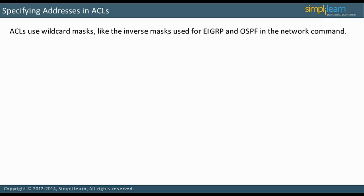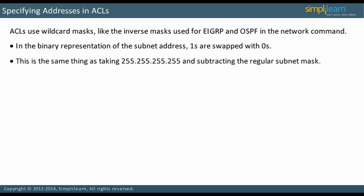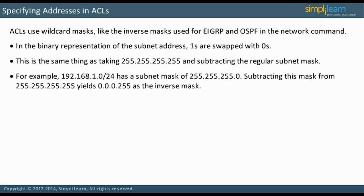ACLs use wildcard masks, like the inverse masks used for EIGRP and OSPF in the network command. To construct an inverse mask, the ones are swapped with the zeros in the binary representation of the subnet address. This is the same as taking 255.255.255.255 and subtracting the regular subnet mask. For example, 192.168.1.0/24 has a subnet mask of 255.255.255.0. Subtracting this mask from 255.255.255.255 yields 0.0.0.255 as the inverse mask.